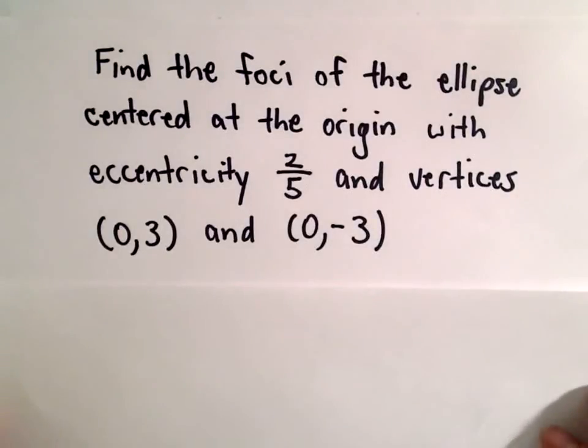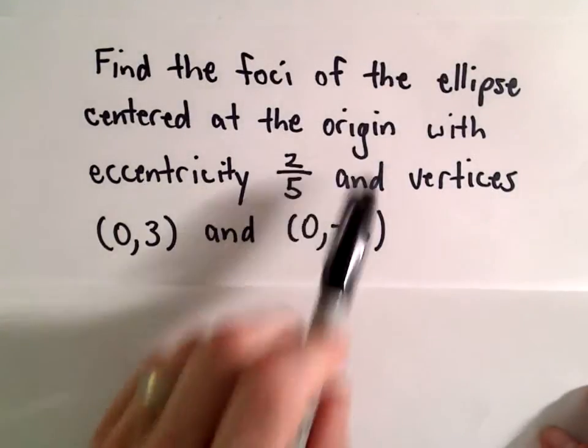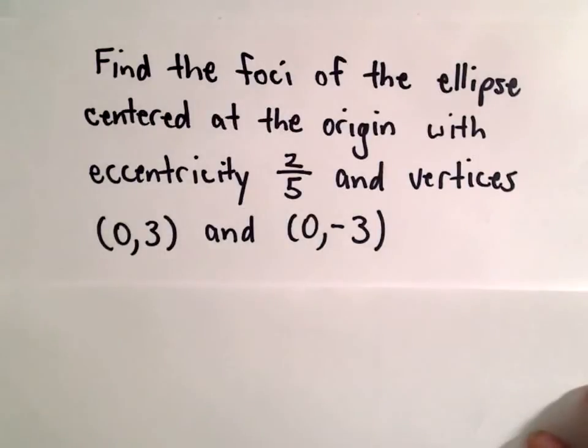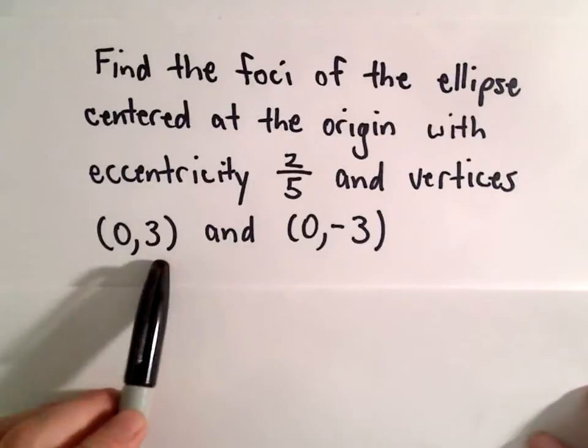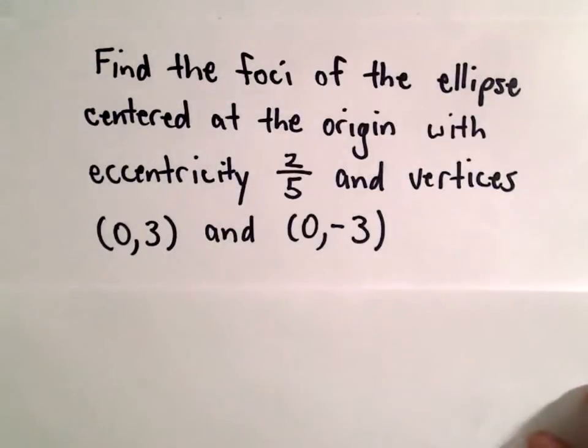Alright, in this example, we're going to find the foci of an ellipse that's centered at the origin. It has an eccentricity of two-fifths, and the vertices are going to be located at (0, 3) and (0, -3).